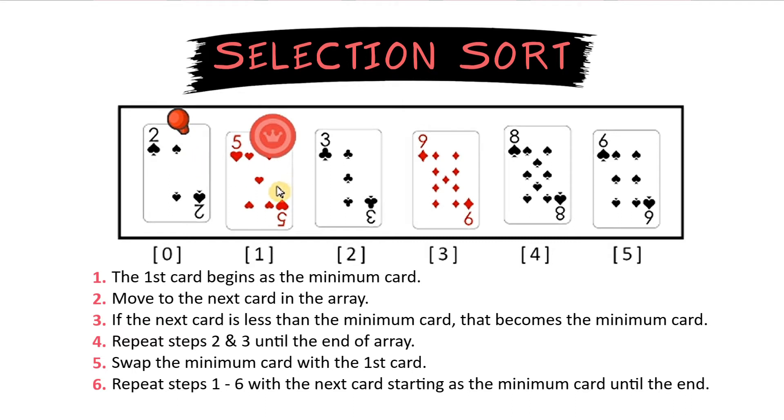We repeat this process now starting at the next card which is a 5. 5 will be the minimum number. We check 3. Is that less than 5? It is so that becomes the new minimum card.